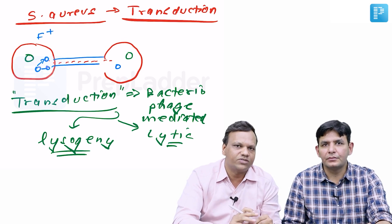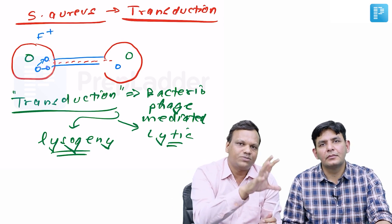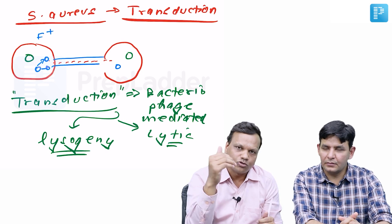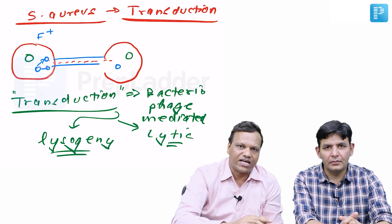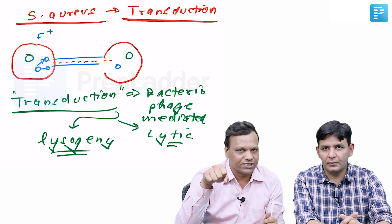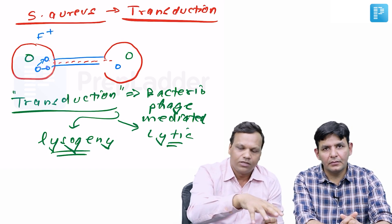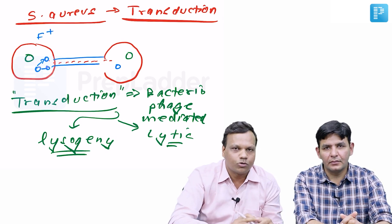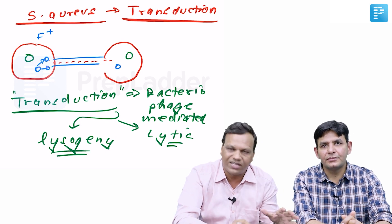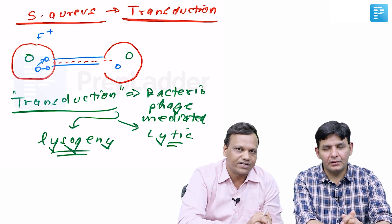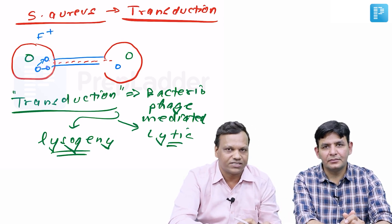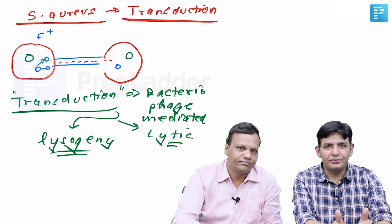Transduction is by bacteriophage — the virus infects a bacterium, picks up the resistance gene, and carries it to another bacterium. Transformation is the least important method — the bacterium picks up free resistance genes from the environment. Conjugation is the most important overall method of drug resistance transfer. Remember the key difference: mutational drug resistance causes single drug resistance (important in TB), while transferable drug resistance causes multiple drug resistance. This topic is very important — one question is likely from this.